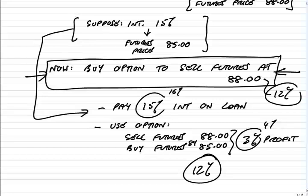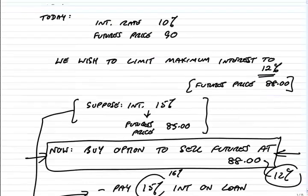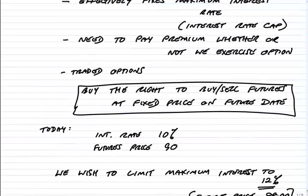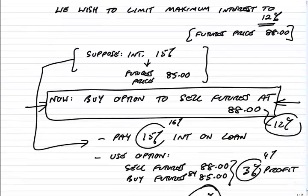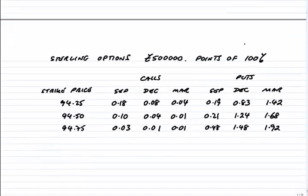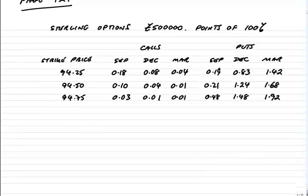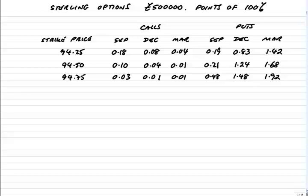If you're going to buy any options, there is going to be a premium payable. We need to pay a premium whether we use it or not. With traded options, in a similar way to foreign currency options, the premiums are quoted in a table. If you look at page 121 of the course notes, there's an example there — it isn't an exam-level one, we'll do an exam-level one after — but it explains what the different headings mean in the table.